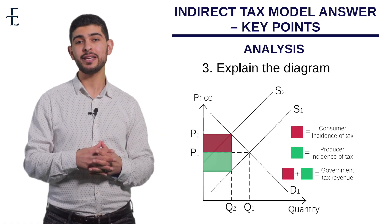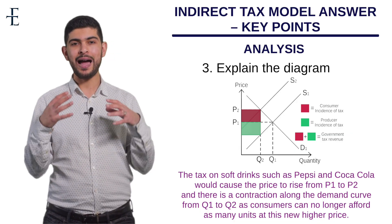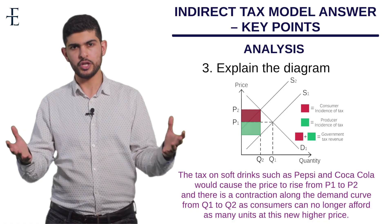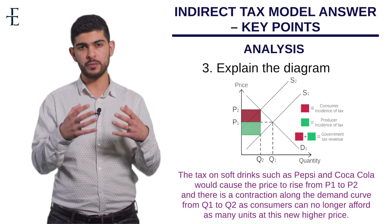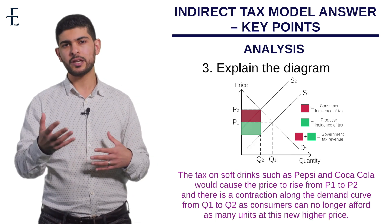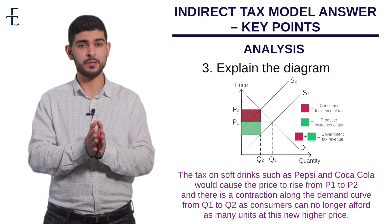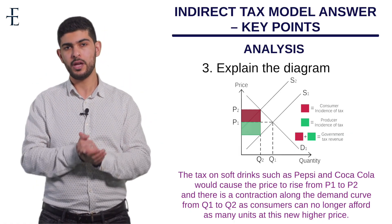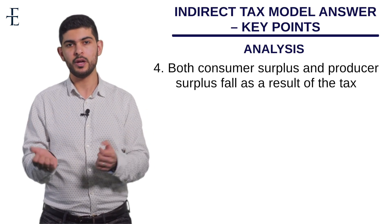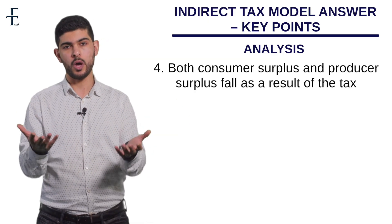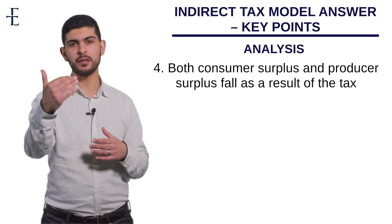First, what happens to the price of sugary drinks or sugary food? It's going to go up because the price rises when the supply curve shifts inwards. What therefore happens to the amount consumed? It's going to go down. So talk about how the price has risen from P1 to P2 and the quantity has fallen from Q1 to Q2. It's always a good idea to throw in technical terminology: consumer surplus falls because it's the difference between the maximum price you're willing to pay and the actual market price. Producer surplus also falls because the producer now gives up some revenue to the government — their costs are going up. That's our clear explanation of knowledge and application analysis based on the diagram.